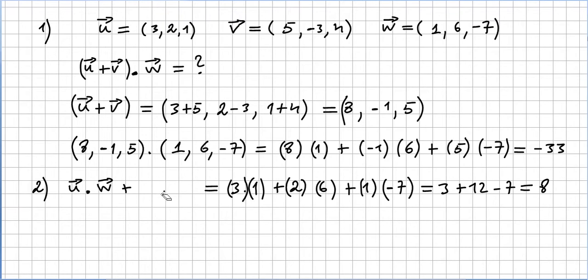So u times w is 3 times 1, 2 times 6, 1 times (-7). So we are getting 3, 12, -7, which equals 8. Now we have to do v times w.